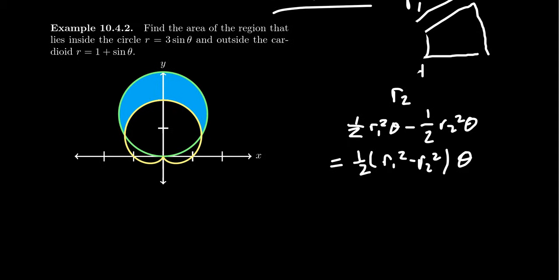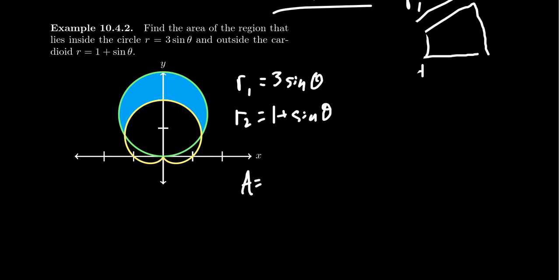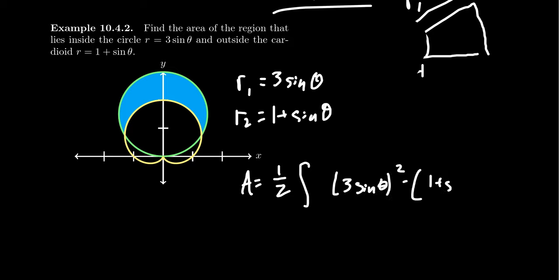As the illustration shows, the outer radius r1 is the circle 3 sine theta, and the inner radius r2 is the cardioid 1 plus sine theta. Taking the area between these two curves, we get one-half times the integral — we'll come back to the bounds in a second — of the outer radius squared, (3 sine theta) squared, minus the inner radius squared, (1 plus sine theta) squared, all times d theta.